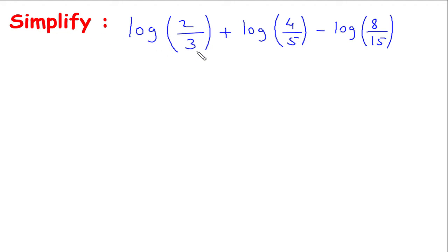Simplify log of 2 by 3 plus log of 4 by 5 minus log of 8 by 15. Solution: log of 2 by 3 plus log of 4 by 5 minus log of 8 by 15.